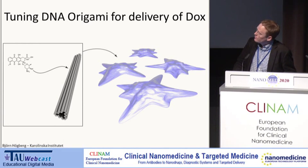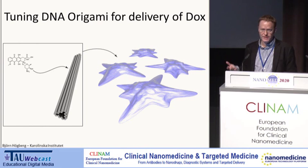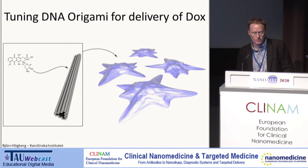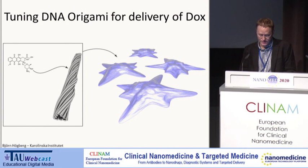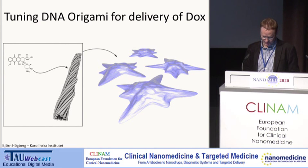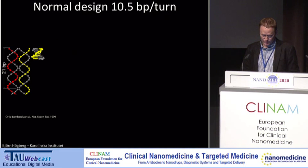Back to the topic at hand: how can we tune DNA origami designs so that they work better than normal double-stranded DNA for delivery of doxorubicin? I'm going to show you that by making twisted nanotubes we can load more drug and release it over a longer period of time. Let me go into the detail of how we construct these objects.